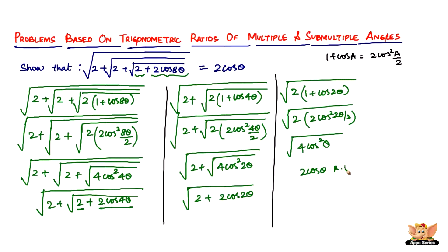So we have proved that √(2 + √(2 + √(2 + 2cos8θ))) = 2cosθ. It might have seemed a little complicated in the beginning, but it was quite simple — all you had to do is use the relevant formula in the right places and keep eliminating the square roots until you arrive at 2cosθ, which is the right-hand side. Hence proved. I'll see you in the following videos with more problems based on trigonometric ratios of multiple and submultiple angles.